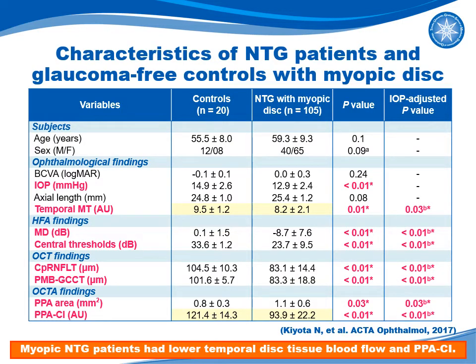This slide shows the characteristics of NTG patients and glaucoma-free controls with myopic disc. There are no differences in age, sex, or axial lengths. We found that red-highlighted variables were significantly different between the two groups. Myopic NTG patients had lower temporal disc blood flow and PPA-CI.